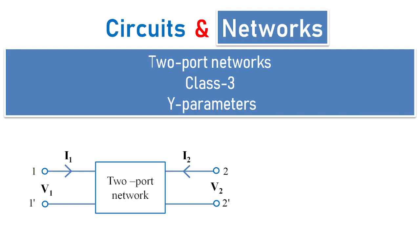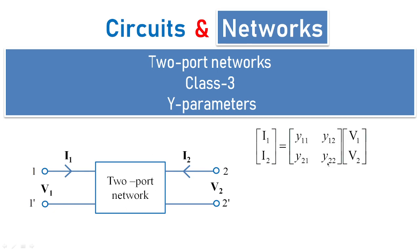Hi, welcome to another session of Circuits and Networks. In today's class, that is class 3, under two-port networks, we are going to deal with Y parameters. In a two-port network, the Y parameters are given by Y equals Y11, Y12, Y21, and Y22. We have currents I1 and I2 expressed in terms of voltages V1 and V2.